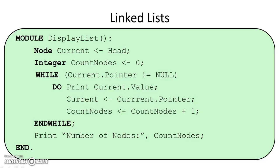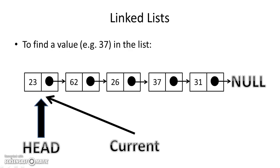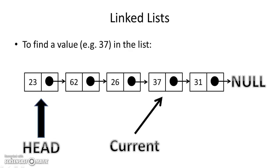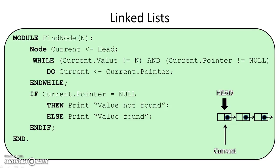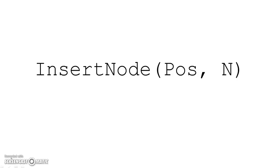To find a node, say we're looking for value n (37 in this case), we use current and check each element. If it's not 37 we move on; if we find 37 we're done. In code, we loop with two conditions: current value is not n, and current pointer is not null. After the loop, either we've reached the end (current pointer is null) and haven't found it, or current dot value equals n and we have found it.